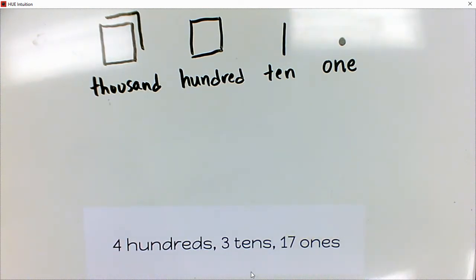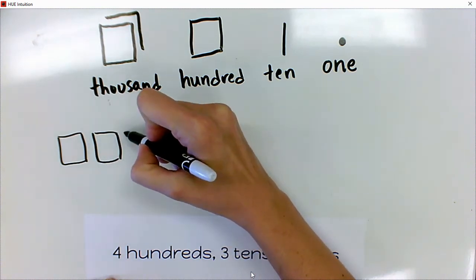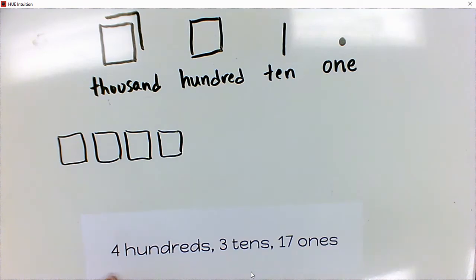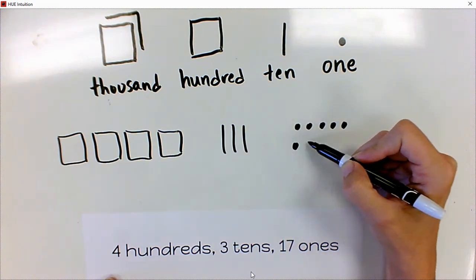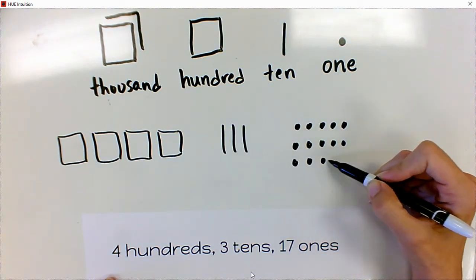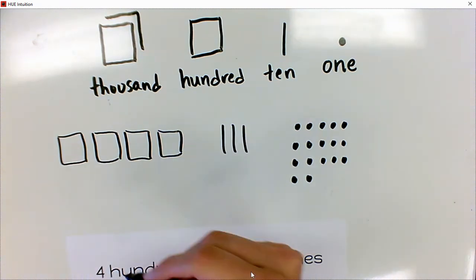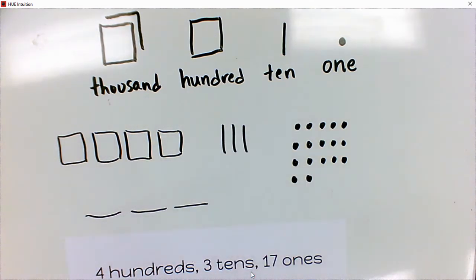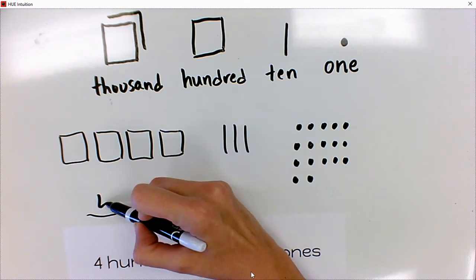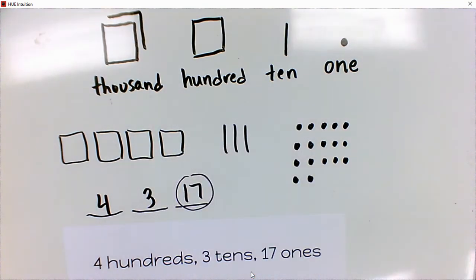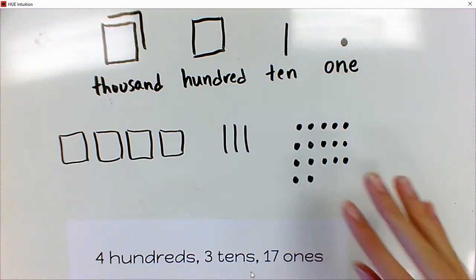Let's try drawing my number. I have four hundreds, three tens, and seventeen ones. I'll draw four squares for hundreds, three lines for tens, and seventeen dots for ones. When I go to write this number, I know I need hundreds, tens, and ones places. But I notice a problem — I can't put a seventeen in the ones place. Some of these ones are not ones at all; they're actually a ten hiding with the ones. Remember that ten ones makes another ten, so let's bundle those ten ones together and move them over.